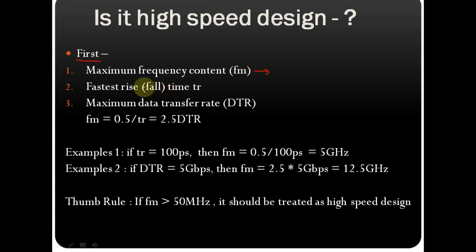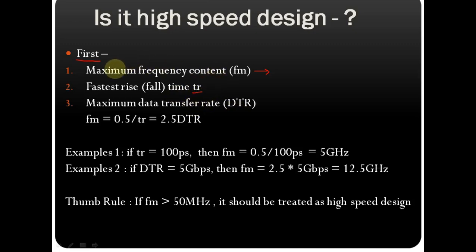The second parameter is the fastest rise or fall time of your digital circuit, given by tr. The third parameter is the maximum data transfer rate, called DTR. If you know any one of these three parameters, you can find the others using a formula.